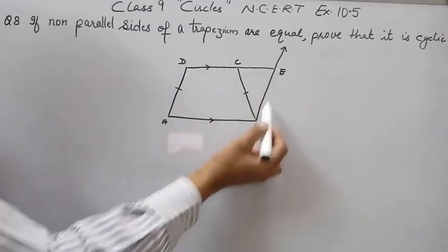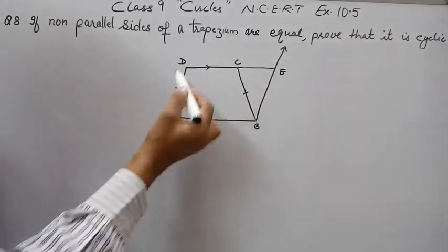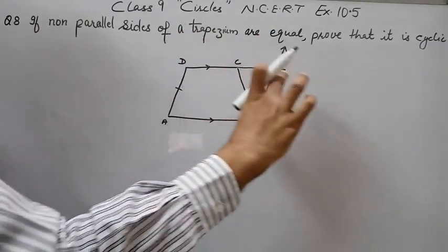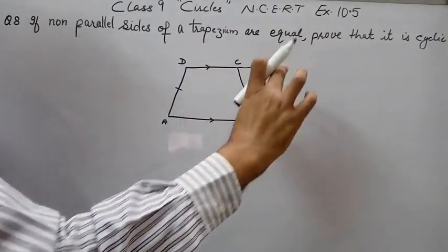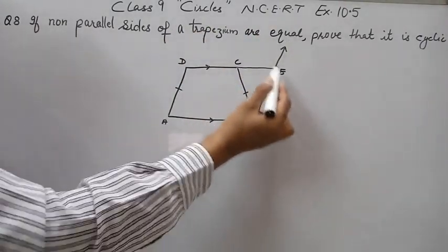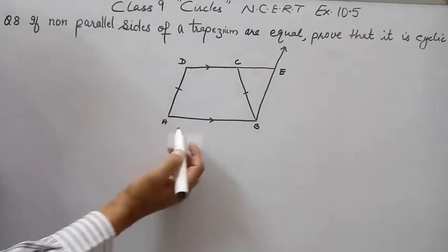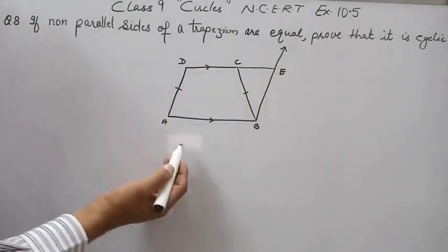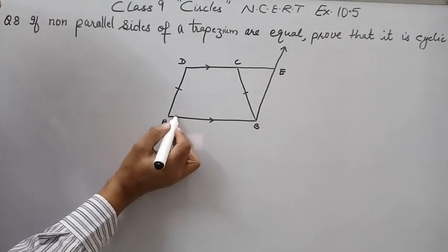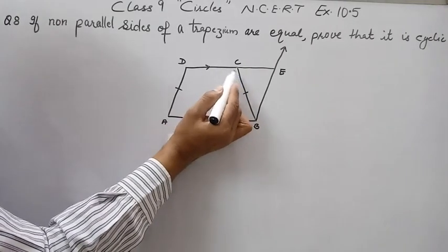So ABED is a parallelogram because AB is parallel to ED and AD is parallel to BE — both pairs of opposite sides are parallel. So it is a parallelogram. Now our work is to prove angle A plus angle C equals 180 degrees.